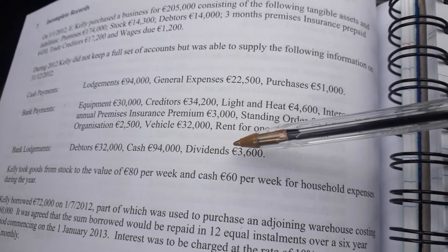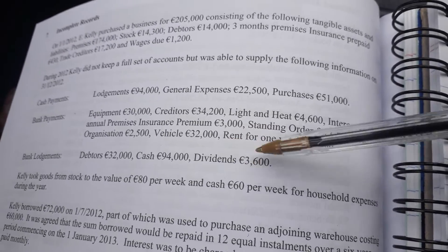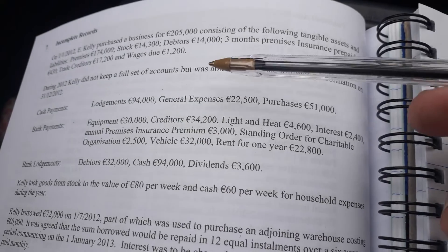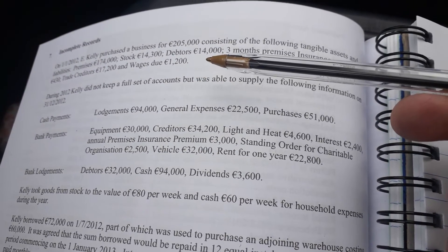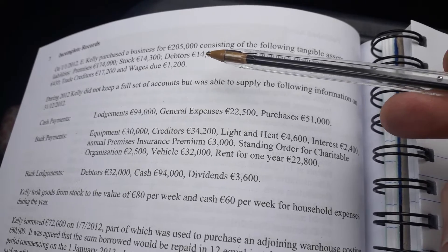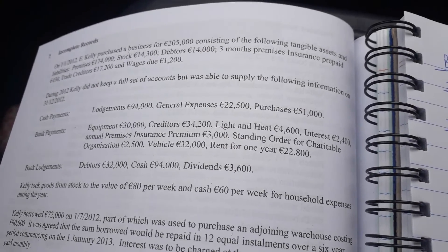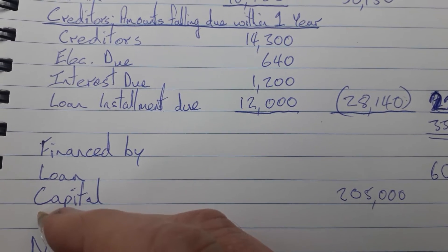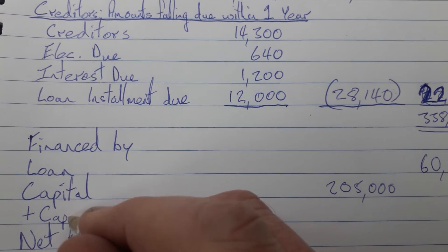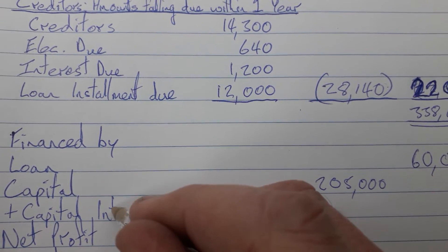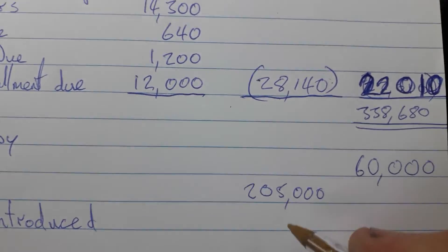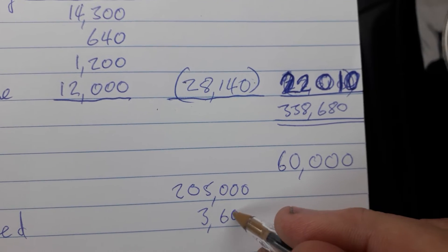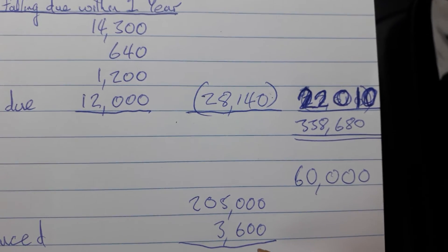In this question, the owner lodged dividends from private investments into the bank account. We know they're from private investments because there's no mention of any shares owned by the business itself — it's not explicitly stated, so we assume these are dividends belonging to the owner. If the owner is giving those dividends, that's more capital they're introducing, and we add it in as capital introduced. That amount was 3,600.